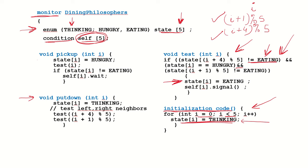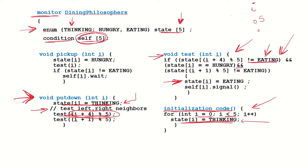After eating, the philosopher has to put down the chopsticks by invoking the put-down function. It sets its state to thinking - philosopher i has finished eating and returns to the thinking state. Now it tests its left and right neighbors. It calls test((i + 4) mod 5) for the right neighbor and test((i + 1) mod 5) for the left neighbor, passing these values into the test function. This allows or asks each neighbor to check whether it wants to eat.